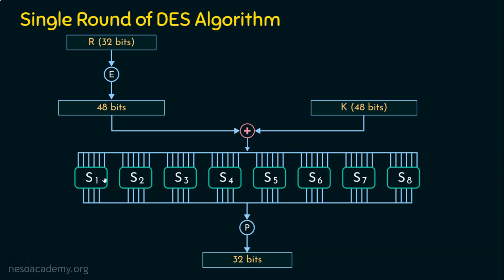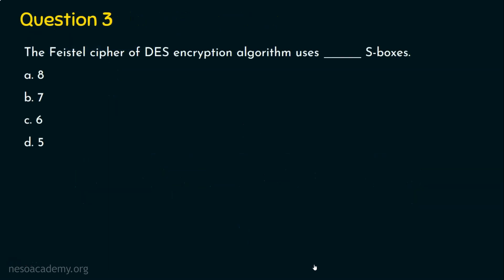How many S-boxes are there? 1, 2, 3, 4, 5, 6, 7 and 8. There are 8 S-boxes as far as DES encryption algorithm is concerned. And now what is happening is, every S-box is going to take 6 bits and it's going to generate 4 bits. 6 bits is reduced to 4 bits. 6 into 8, 48 bits are converted into 4 into 8, 32 bits. This is how the reduction of bits is happening in DES. So, how many S-boxes? Option A, 8 S-boxes.